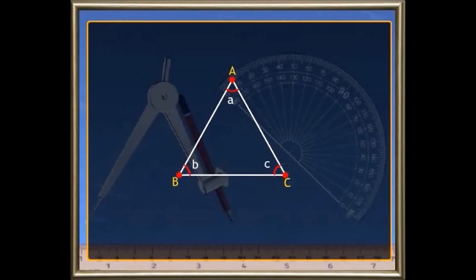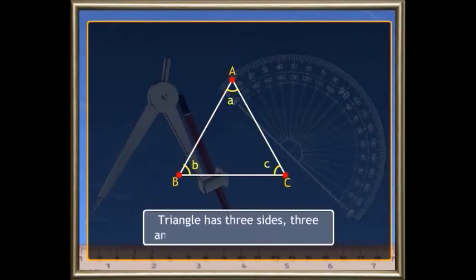In summary, a triangle has three sides, three angles, and three vertices.